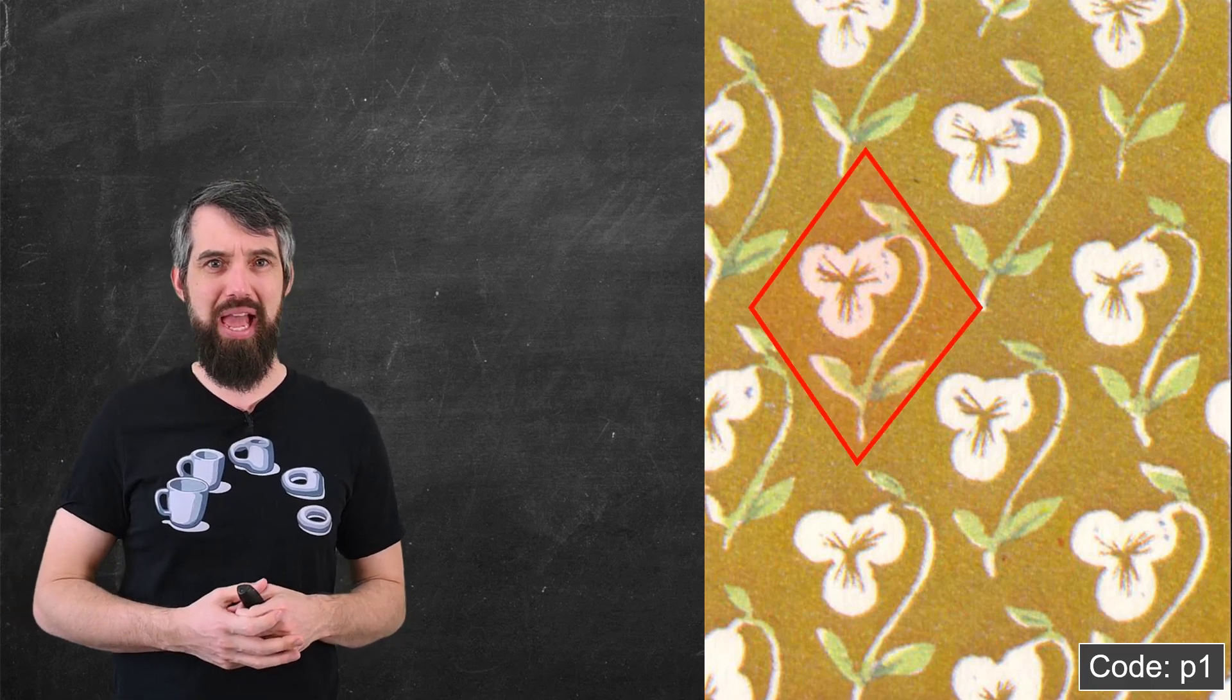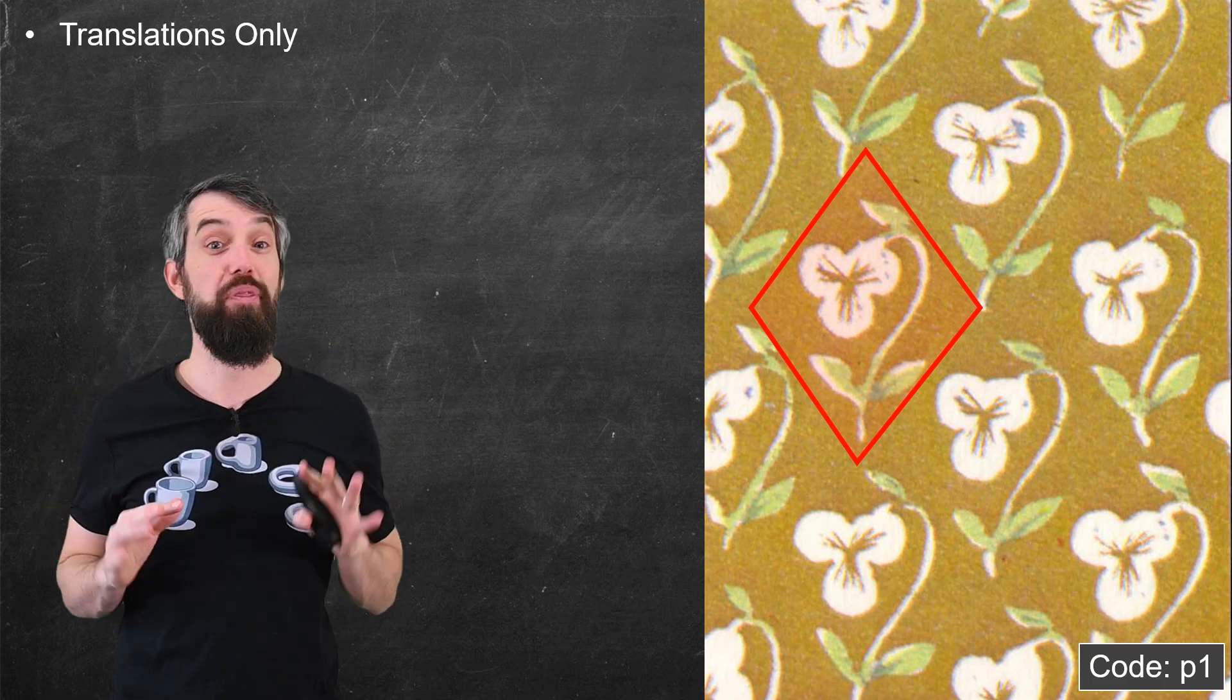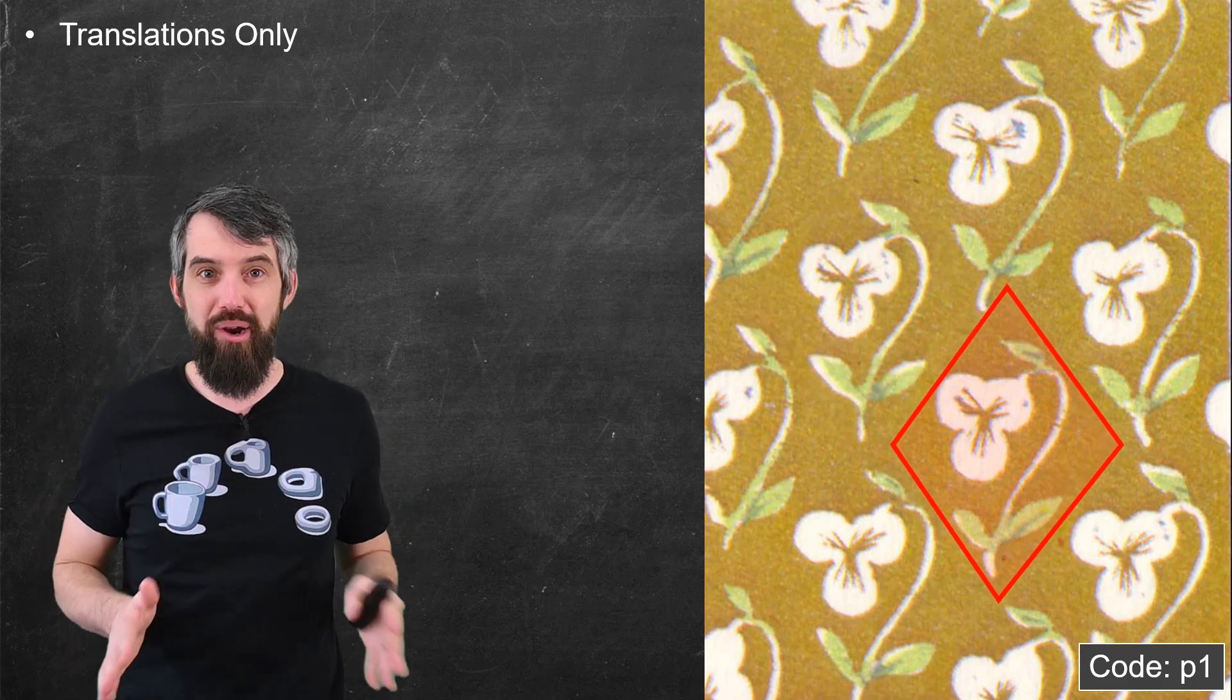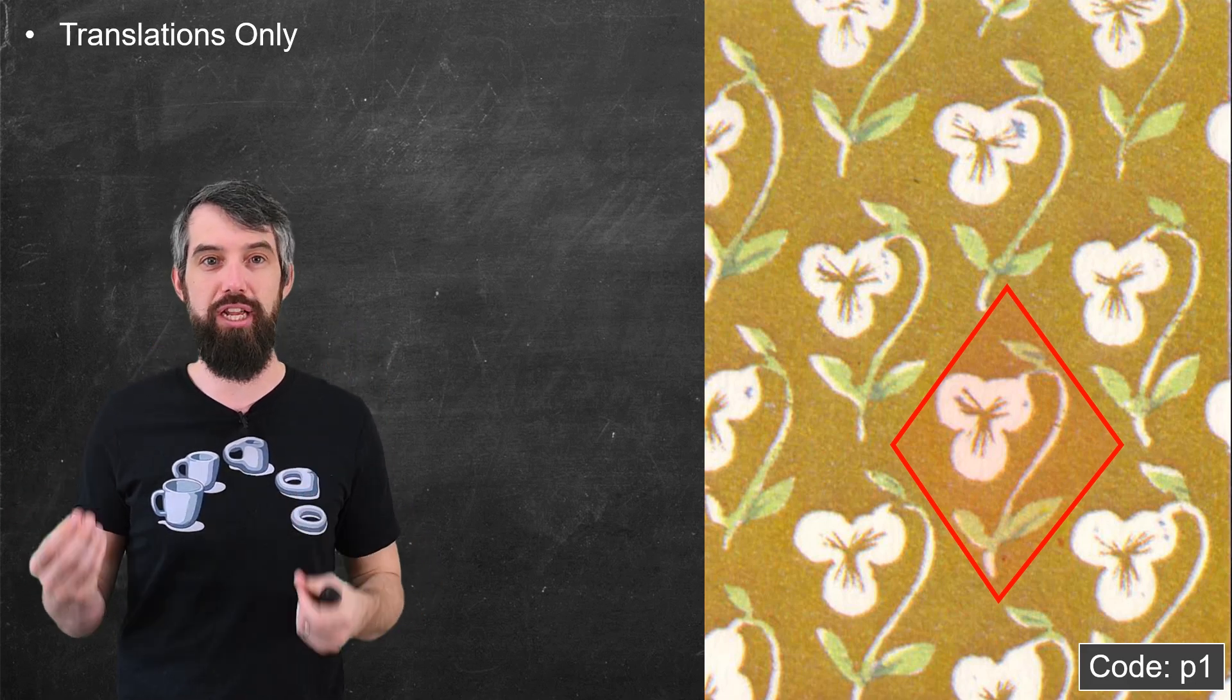The very simplest one is called just P1. This, by the way, is a medieval era wallpaper. And if you notice this, I have a translational symmetry. This little flower is repeated over and over, but that's it. There's nothing else. There's no mirrors, there's no glides, there's no rotations. Any attempt to make this different is going to change it. So the only thing I can do is simply translate it.